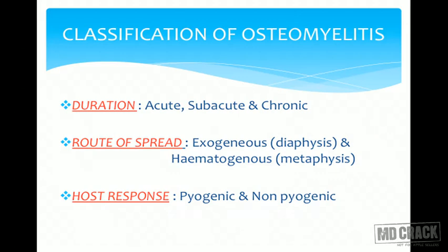The classification of osteomyelitis is divided according to duration, route of spread, and host response. By duration it is subdivided into acute, subacute, or chronic — acute being very early and chronic taking a couple of weeks. The route of spread is either exogenous or hematogenous. Exogenous spread is mainly at the diaphysis of the bone, while hematogenous spread is in the metaphysis. Host response can be either pyogenic or non-pyogenic.